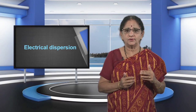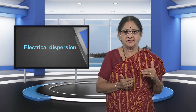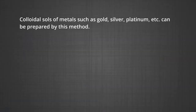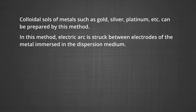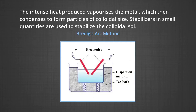Electrical dispersion, also known as Bredig's arc method: this process involves dispersion as well as condensation. Colloidal sols of metals such as gold, silver, platinum, etc. can be prepared by this method. An electric arc is struck between electrodes of the metal immersed in the dispersion medium, as shown in the figure. The intense heat produced vaporizes the metal, which then condenses to form particles of colloidal size. Bredig's arc method is clearly depicted in the figure.